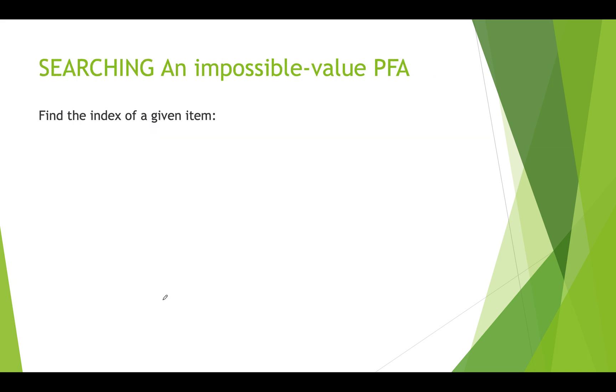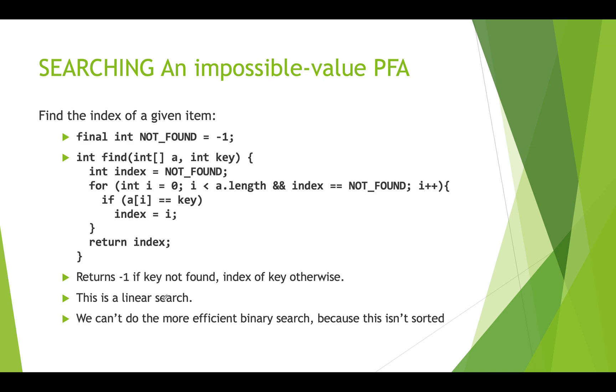So if we want to search an impossible value PFA, it's going to look fairly similar. We're going to try to, in this case, find the index of a given item of our key. And so again, we're going to have our impossible value defined up here as a constant. It's NOT_FOUND and it's set to negative 1. And then we have a function that's called find. We pass in the array and we pass in what we're looking for, which is our key.